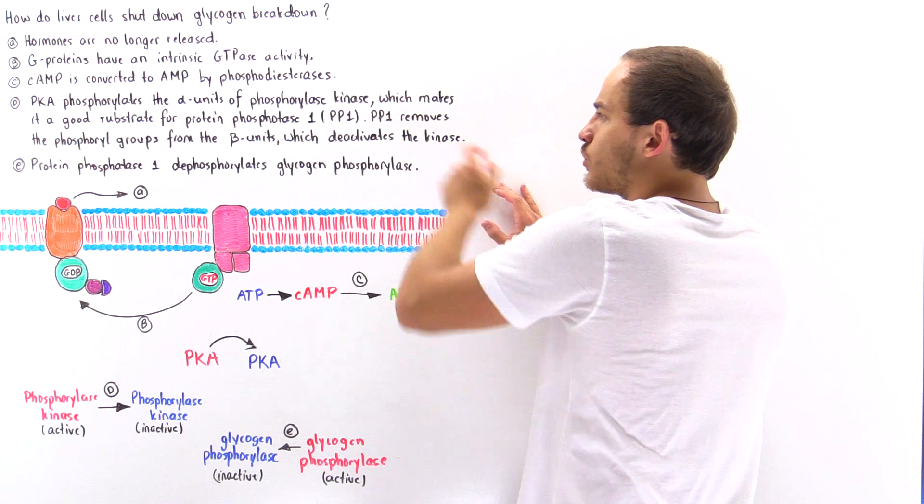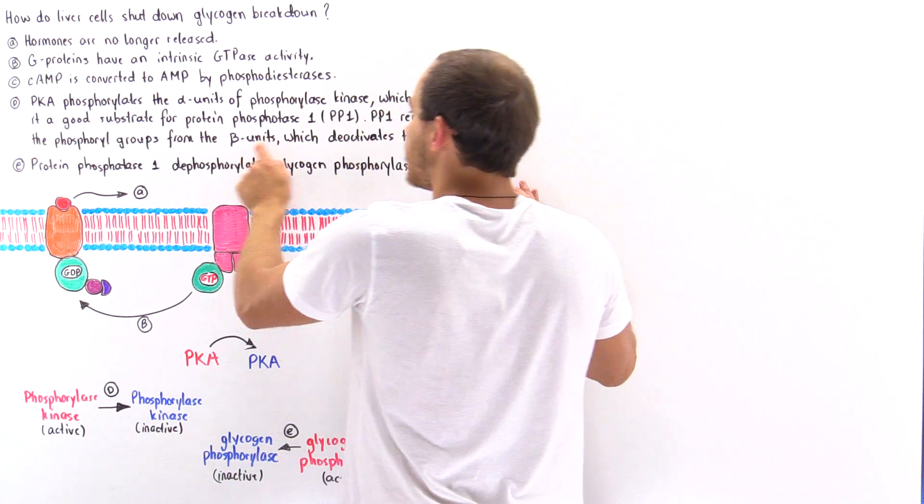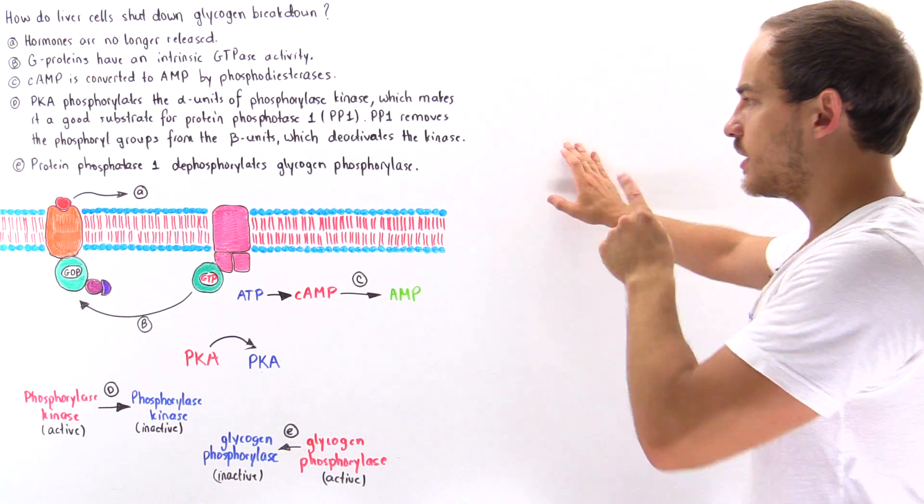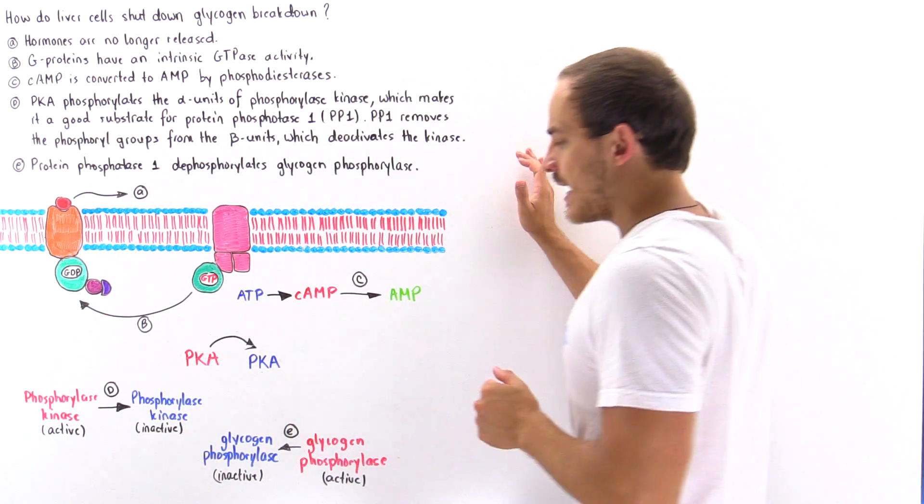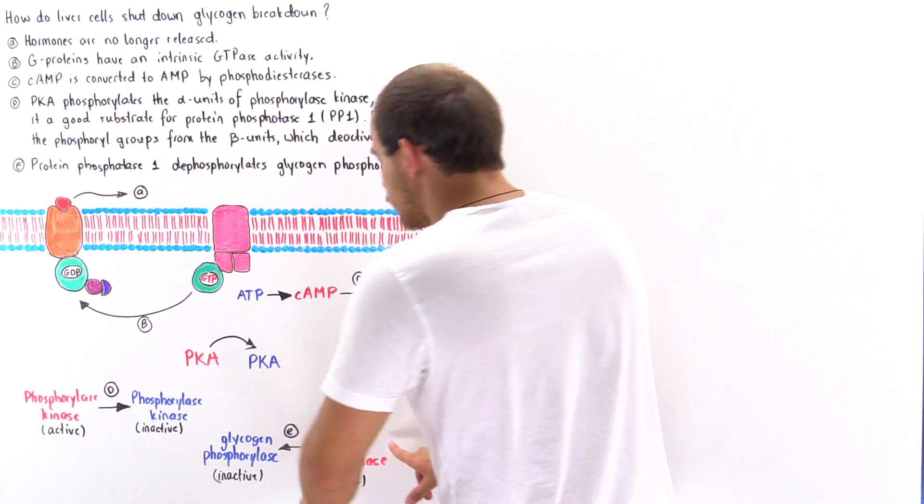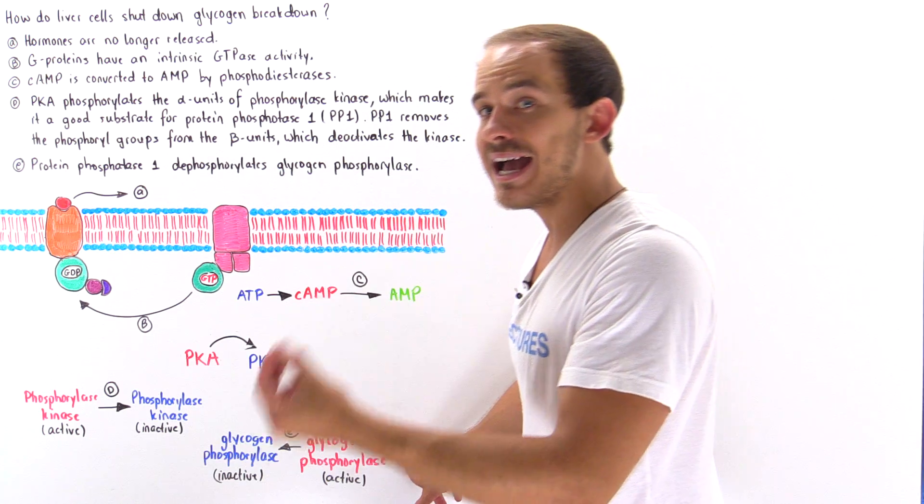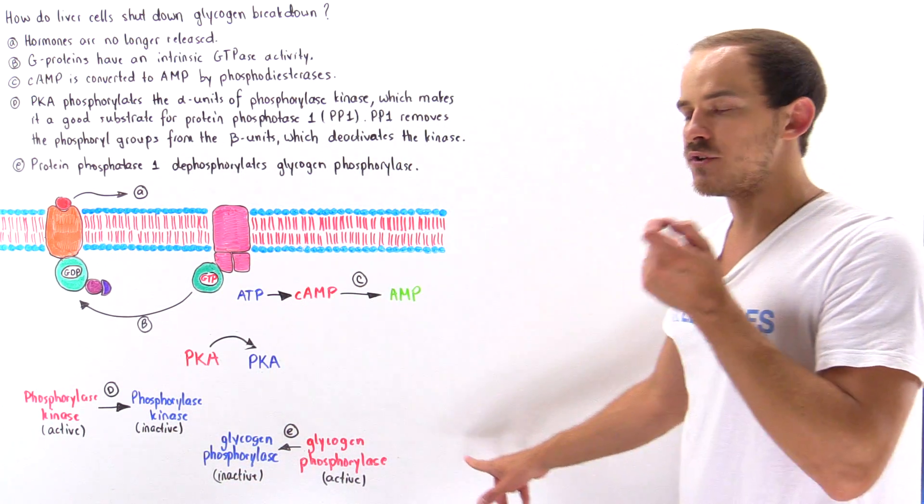In addition, the same protein phosphatase 1 also acts upon glycogen phosphorylase and it deactivates the glycogen phosphorylase by removing those phosphoryl groups.